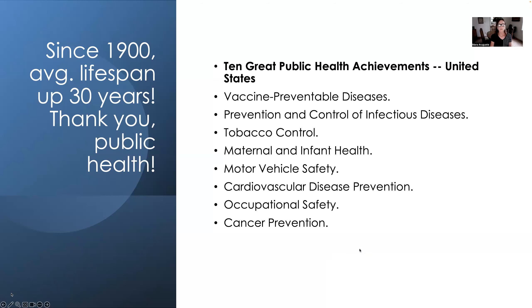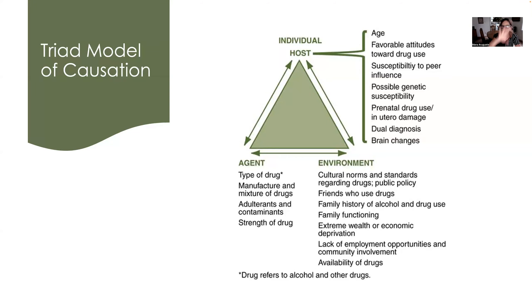Public health uses a triad model of causation to talk about what causes health problems — let's discuss this in terms of drugs, though it applies to any disease. First, we have the individual, called the host. In the case of drug use, this includes being a younger age, having favorable attitudes toward drug use, susceptibility, possible genetic susceptibility, prenatal drug use, dual diagnosis — having another mental health problem — and brain changes.